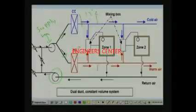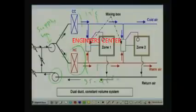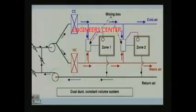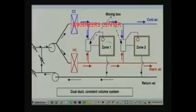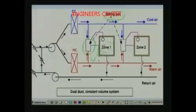Whereas in duct 2, you have a heating coil — HC stands for heating coil. So the air flowing through duct 2 is heated to about 35 to 45 degrees centigrade. So in one duct you have hot air at about 45 degrees centigrade, and in another duct you have cold air at about 13 degrees centigrade. These hot and cold air streams are mixed before each zone — for example, zone 1 — depending upon its load, in what is known as a mixing box.